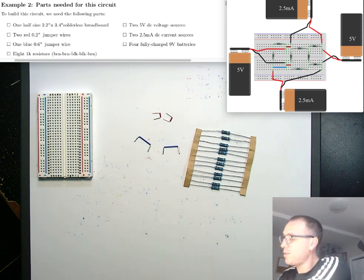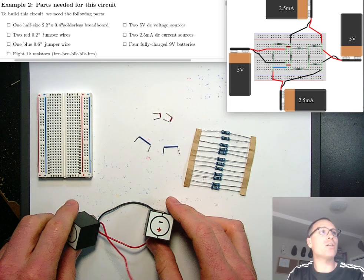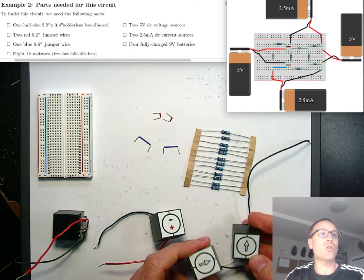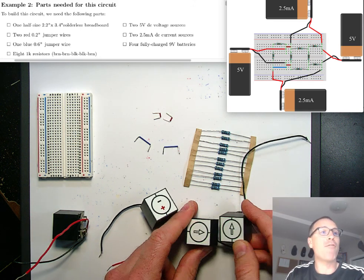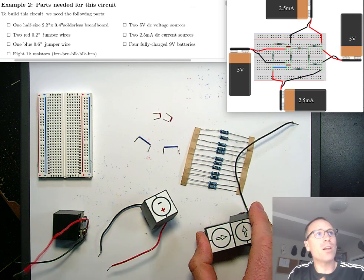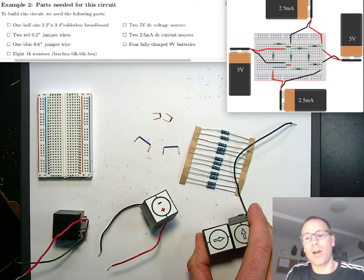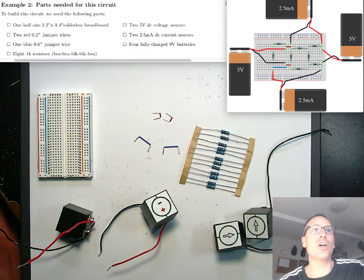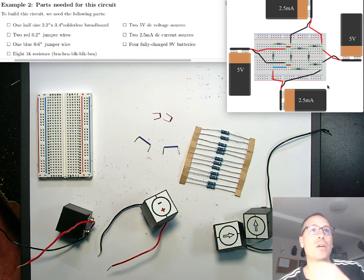I also need two DC voltage sources and then also two DC current sources. Assuming that I have all of that material as well as four fully charged 9-volt batteries, which I'll grab in just a second. We're going to start our build, which is going to look like the circuit that you see on screen here.